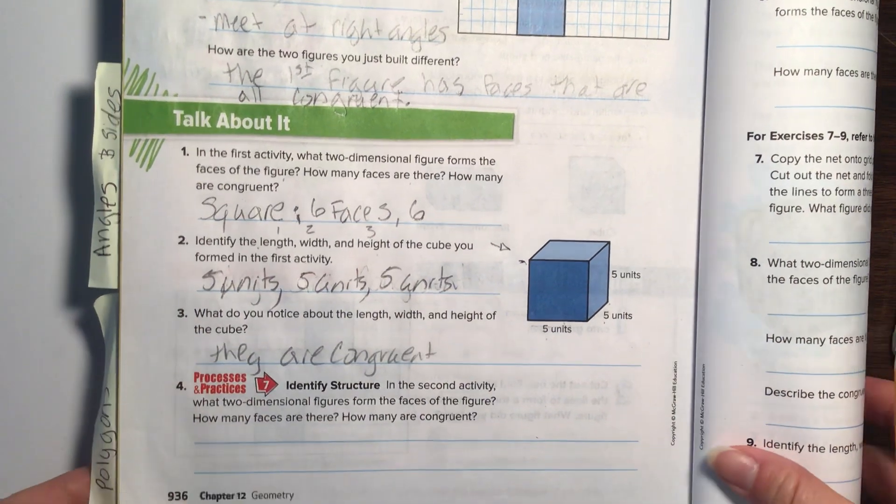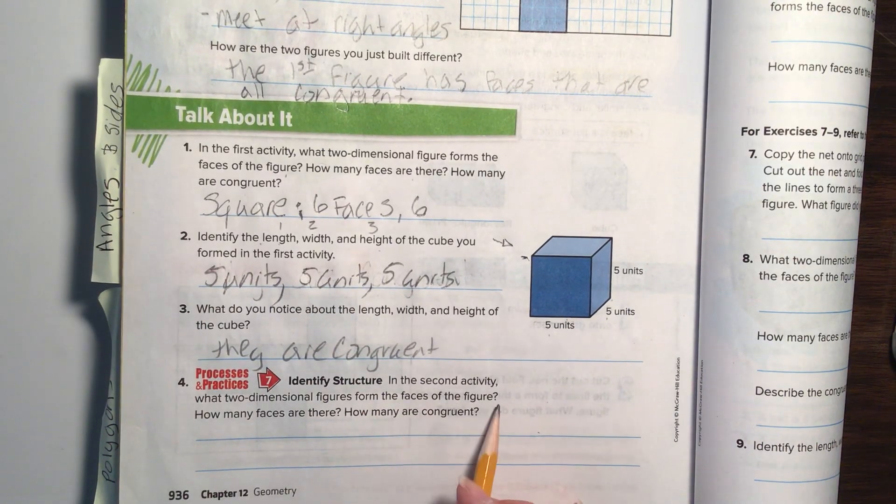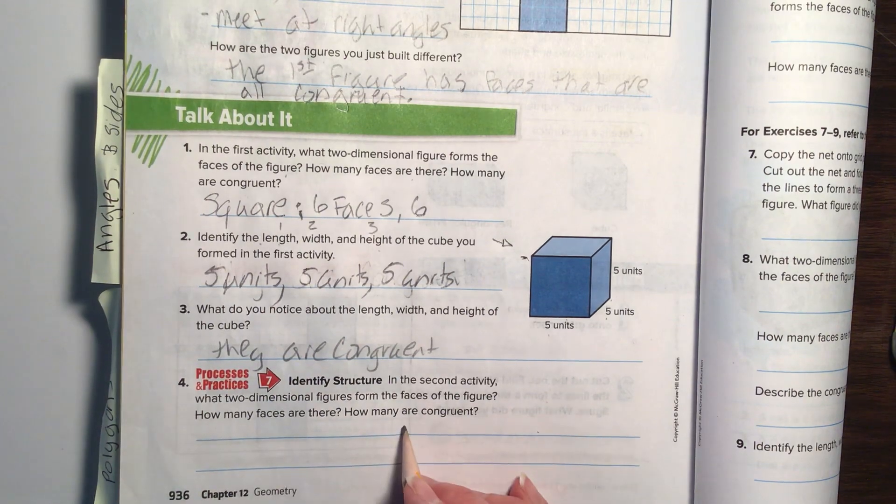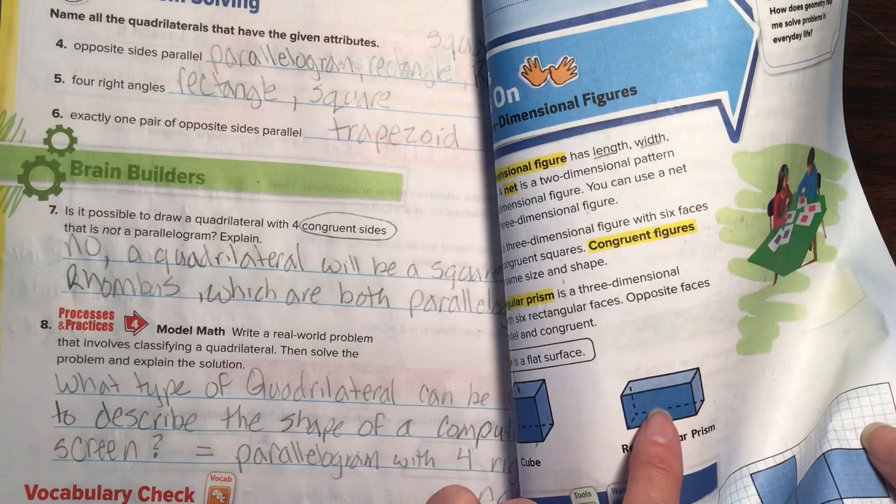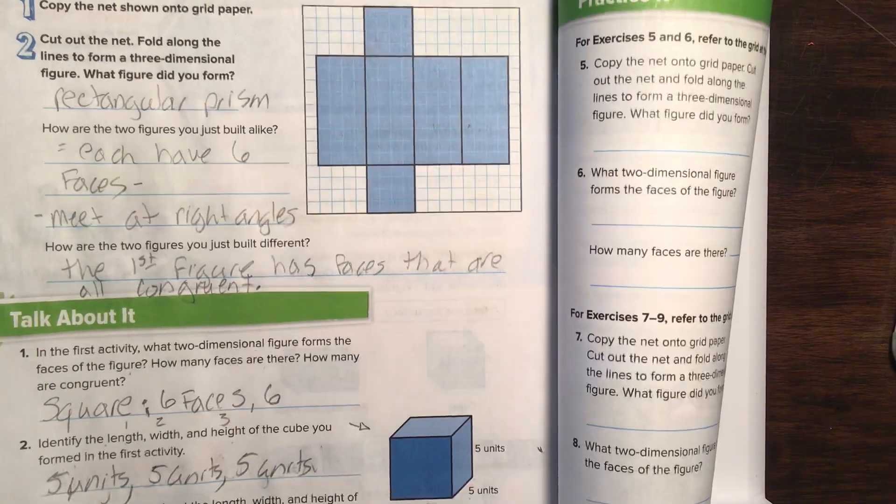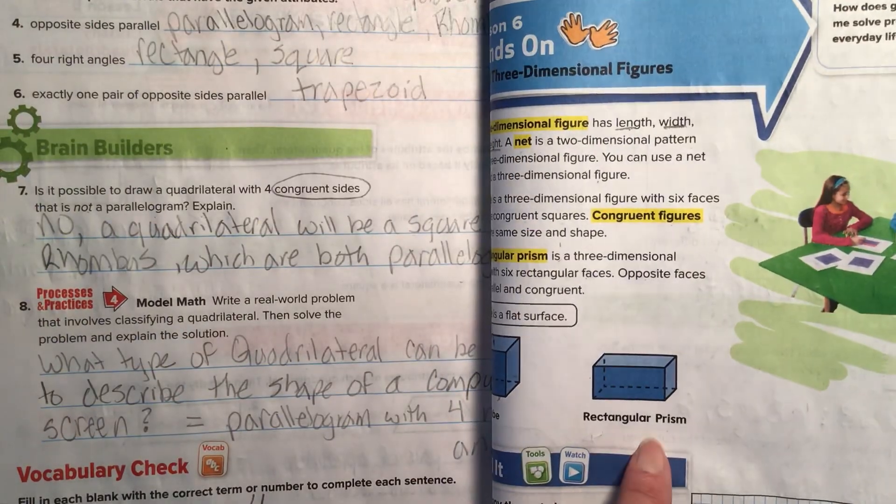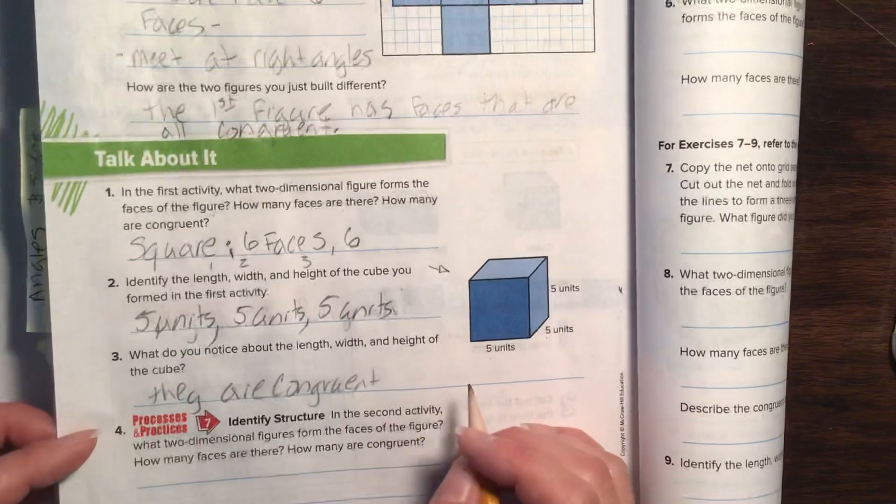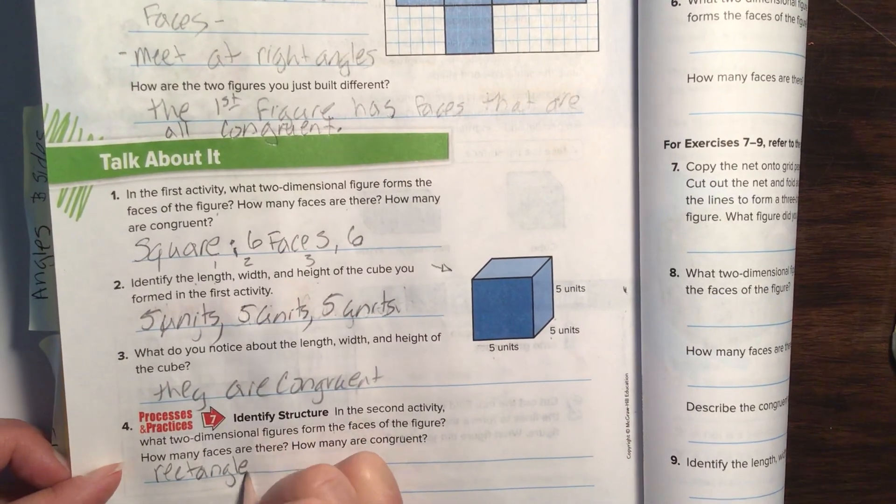Number four. Identifying the structure. In the second activity, what two-dimensional figures form the face of the figure? How many faces are there and how many are congruent? So, now they are talking about us building this. If we were to cut it out and tape it together, it would build this structure right here. So, they want us to see what is a two-dimensional figure. That is called a rectangle, right? So, really easy. We can write rectangle. Good job.